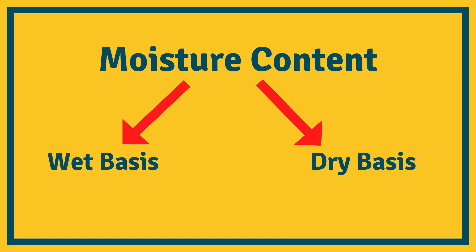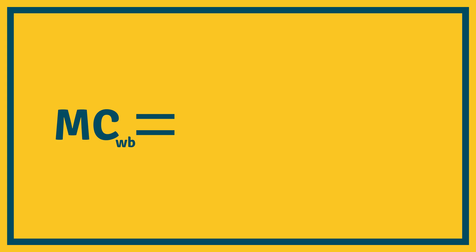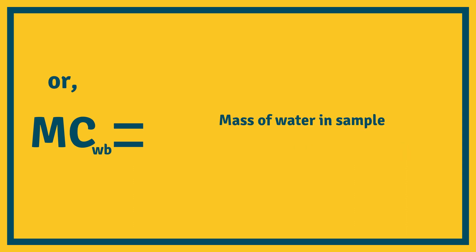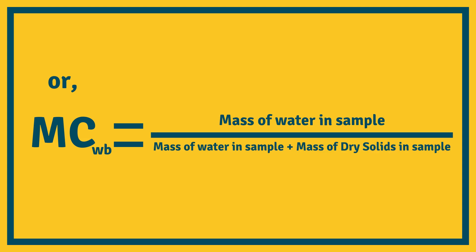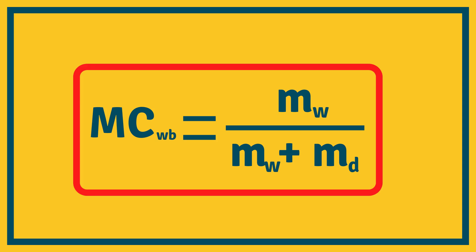Now moisture content can be expressed either in terms of wet basis or in terms of dry basis. Wet basis is the amount of water per unit mass of moist sample. The formula is: MC subscript wb equals mass of water in the sample divided by total mass of sample, or equivalently, mass of water divided by mass of water plus mass of dry solids. In shorter form: MC_wb = mw / (mw + md), where mw is the mass of water and md is the mass of dry solids.